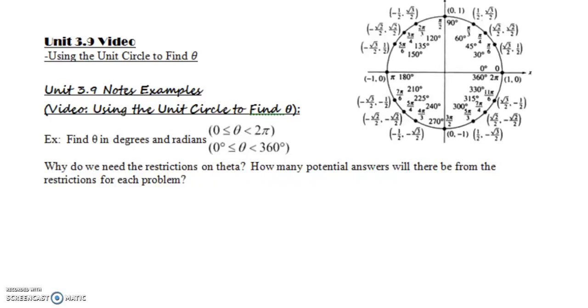We're going to be using the unit circle to find theta. Yesterday we used the unit circle and looked at an angle to find a ratio, but today we're going to do the opposite. We're going to look at a ratio and find an angle, so we're trying to find what theta is.